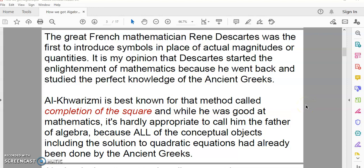Descartes, who was, in my opinion, the last great French mathematician, was the first to introduce symbols. I think he was the first to use the symbol x in place of actual magnitudes or quantities. It's my opinion that he started the Enlightenment because he went back to the perfect knowledge of the ancient Greeks.